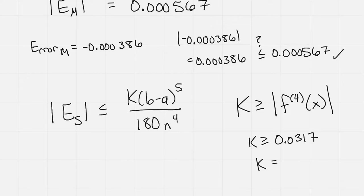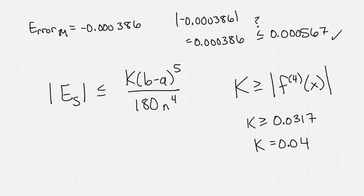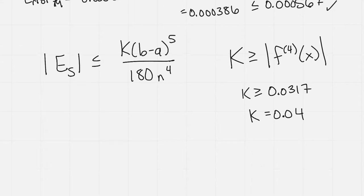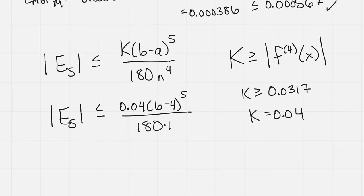So I'm getting k has to be greater than 0.0317. I'm going to let k be equal to 0.04. So I used Desmos to get that, but you could do the fourth derivative, go by hand, and then do that by hand to figure out that k.